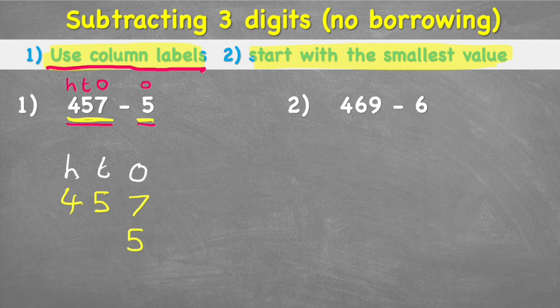The second number, 5, only has a five in the ones column and nothing in the tens or hundreds. I could put placeholder zeros there to show there's nothing — shown as a dotted line since they're not actually in our question, just placeholders. But wait — this is where some people could make a big mistake.